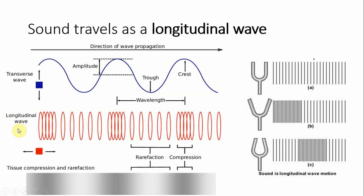We can see compression areas in our picture, and areas where the medium is stretched out. The stretched area is called rarefaction. Compressions are treated as peaks, rarefactions as troughs, and our wavelength is going to be the distance between the middle of those two compressions.